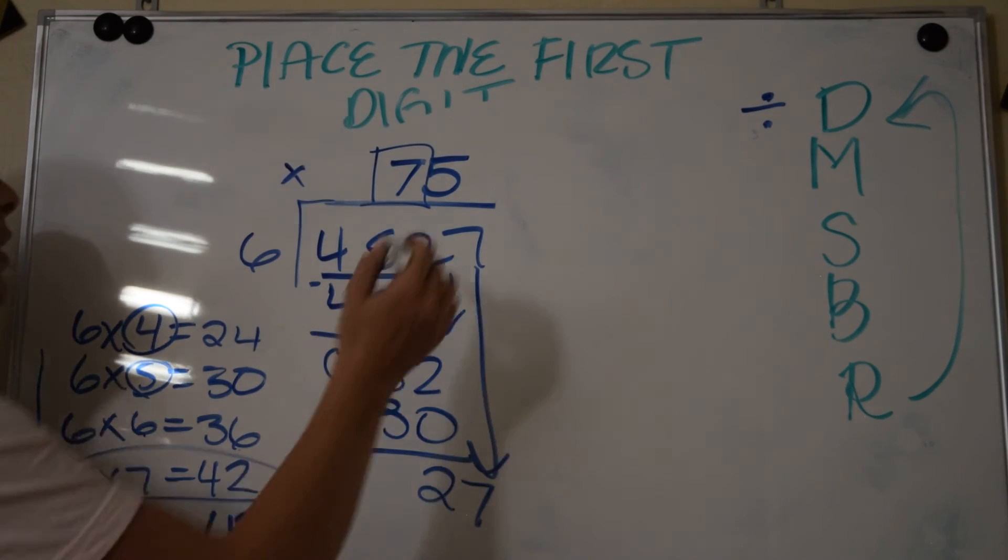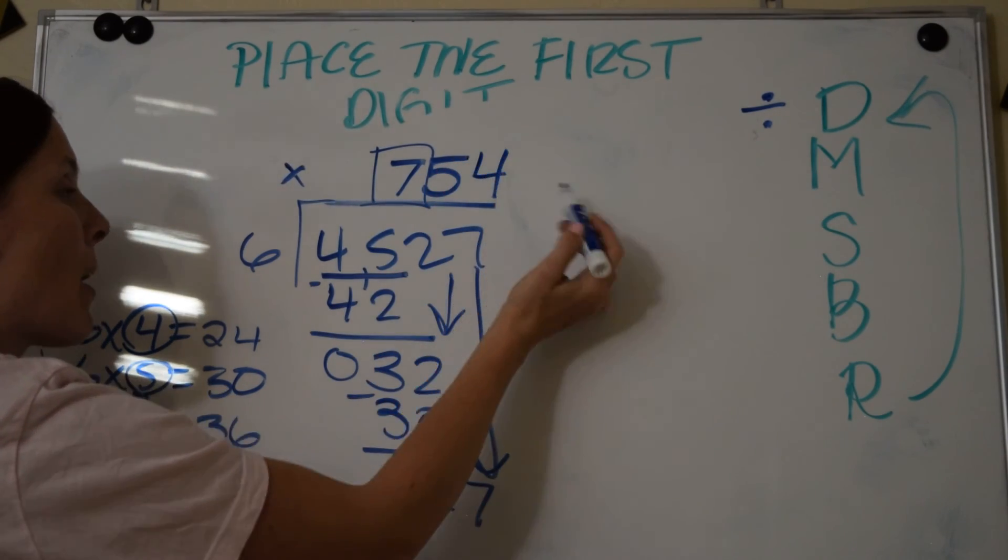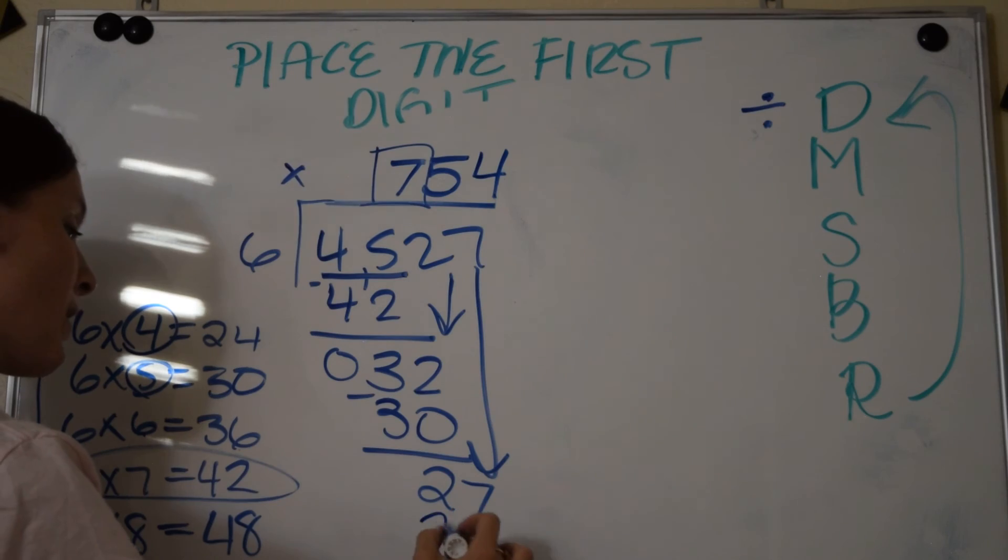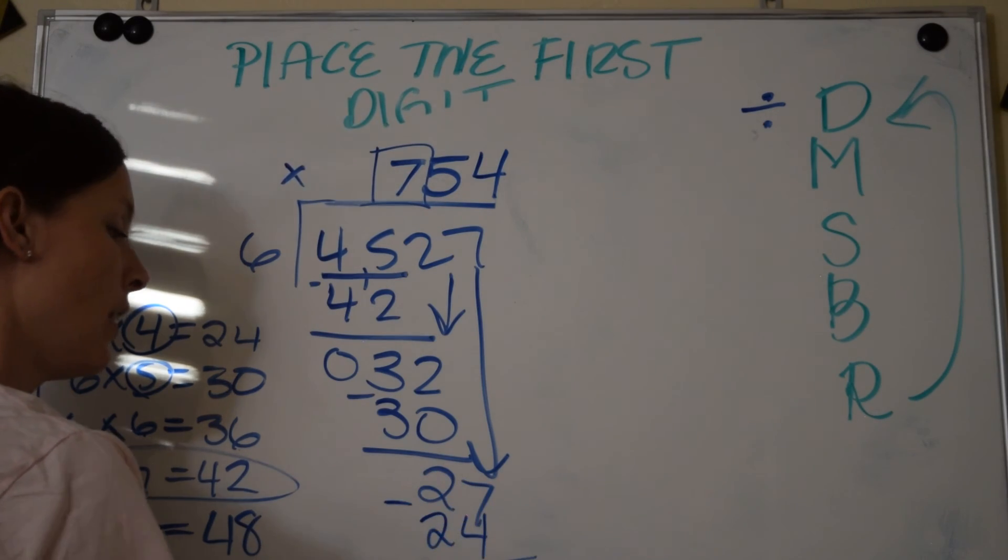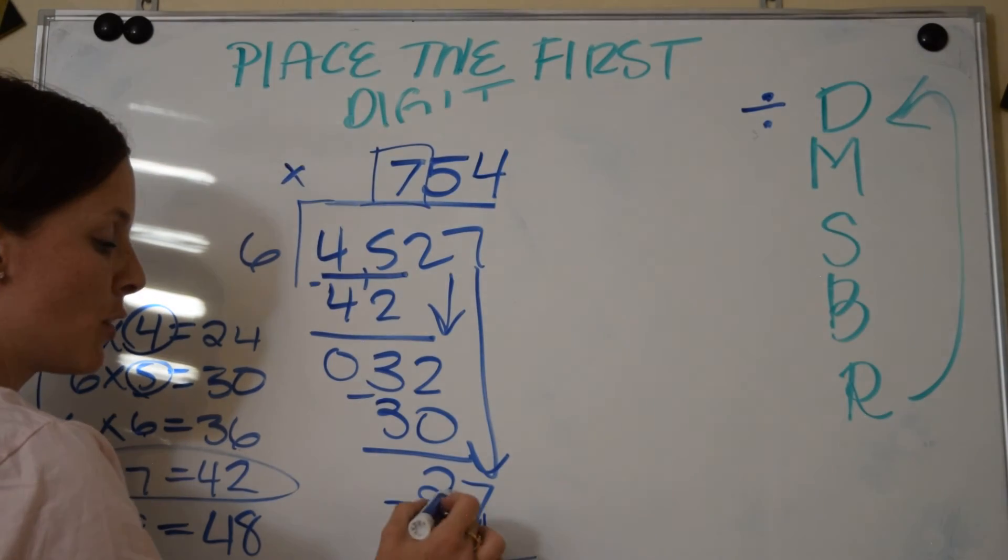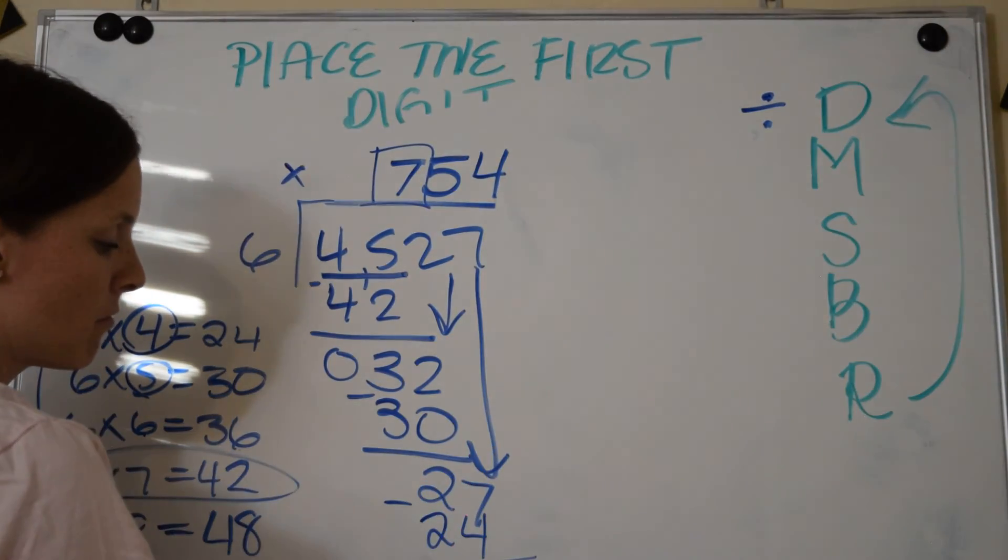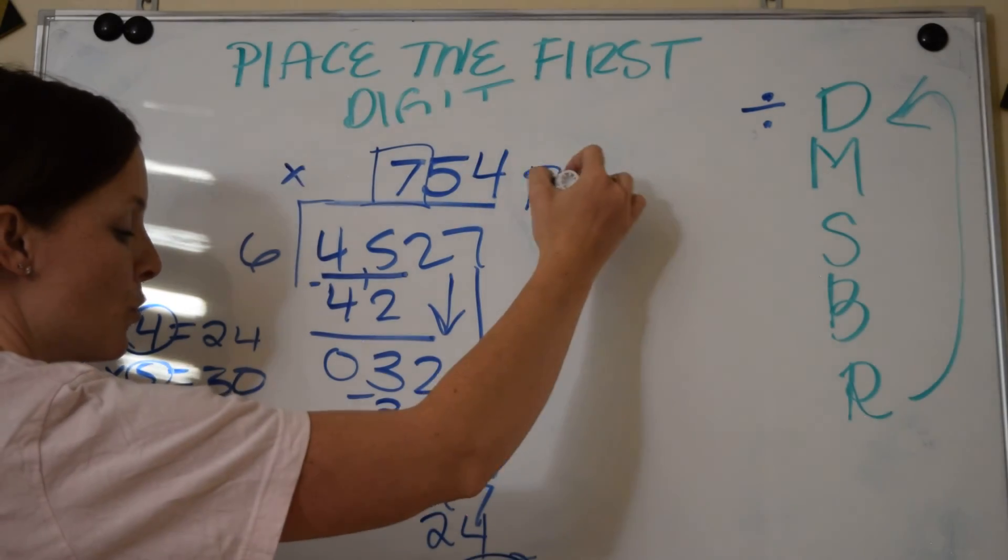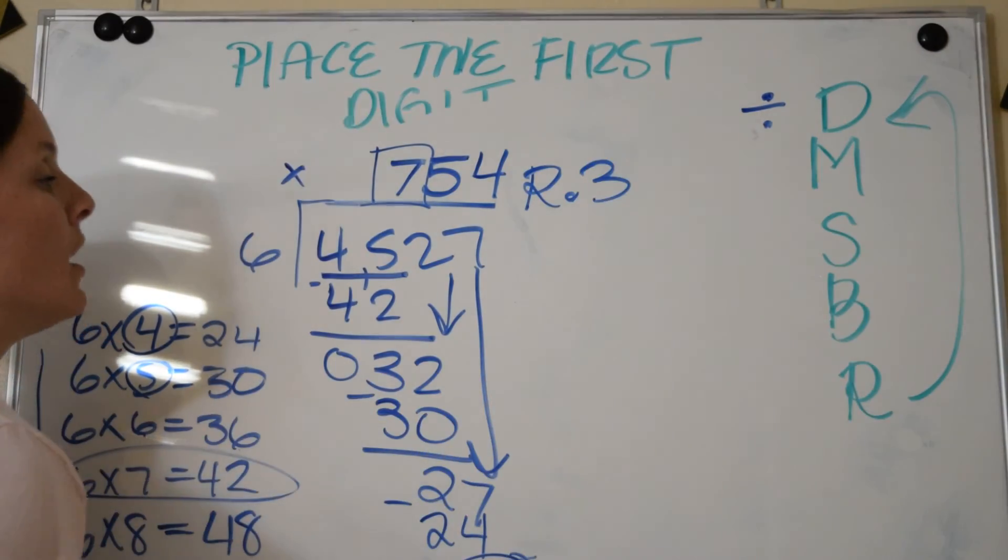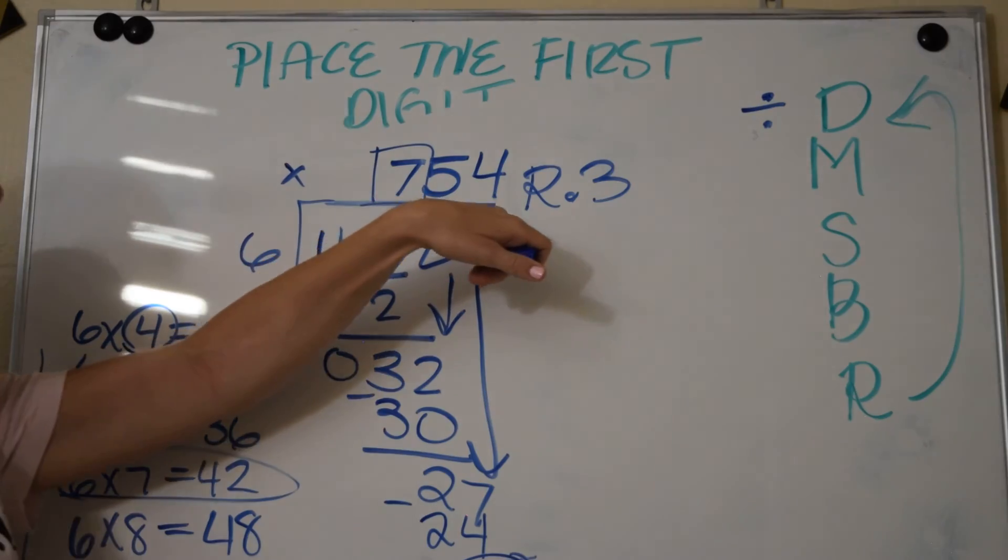Place your 4 in the next open spot. 4 times 6 is 24, and 7 minus 4 is 3, and 2 minus 2 is 0. Bring down... oh, I don't have anything to bring down, but I do have a remainder. Do not forget to write your remainder. So your answer is 754 remainder 3.